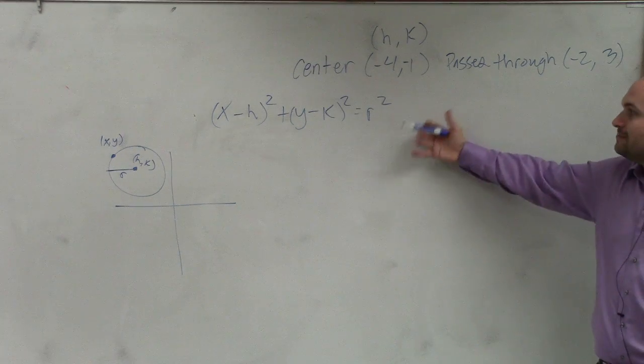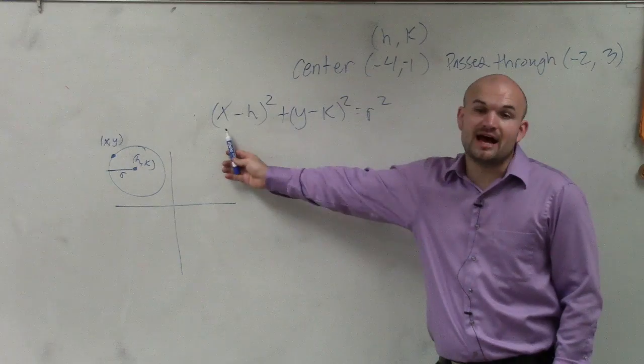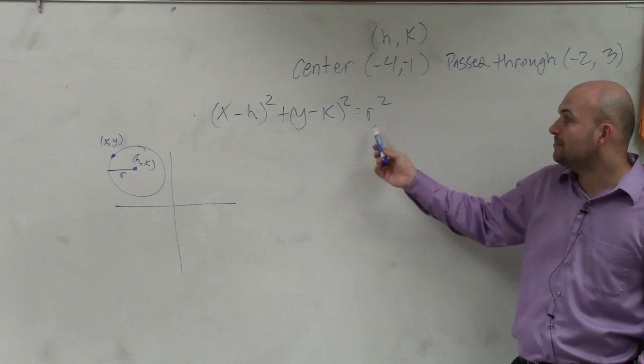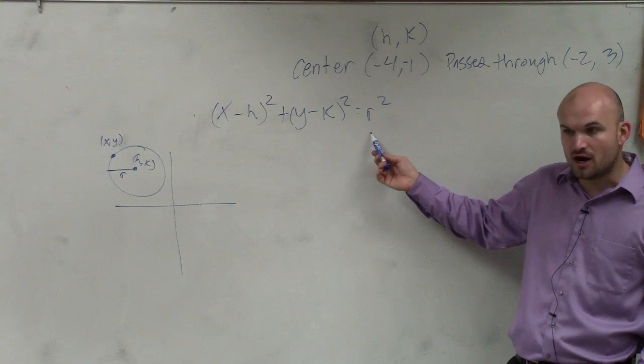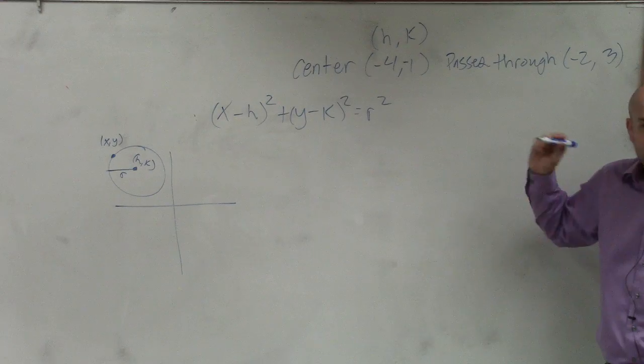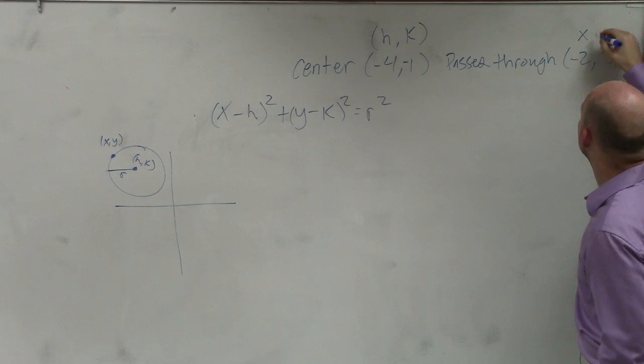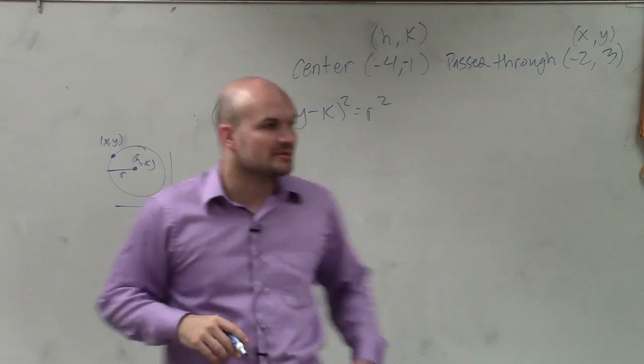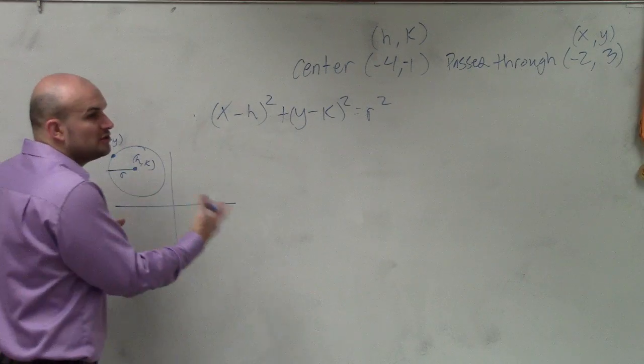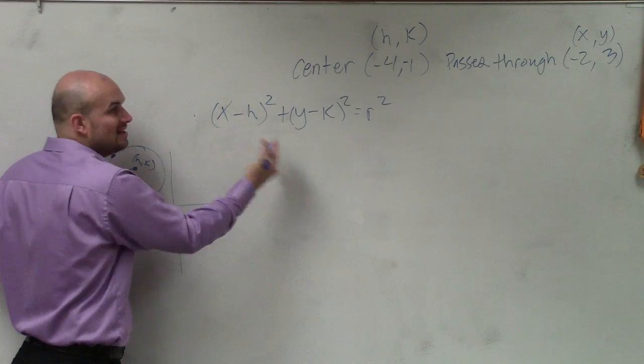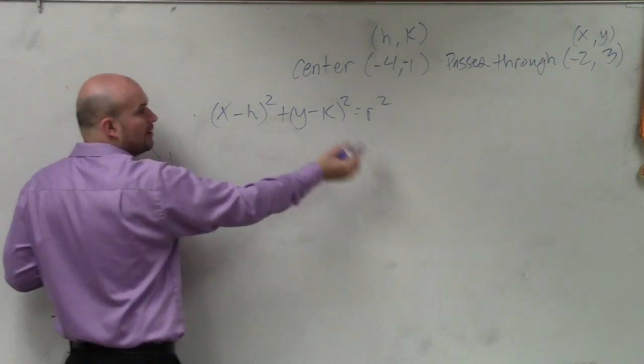No. So if I can plug in values for h and k, but leave r unknown, could I then solve for r? Yes. So do I have anything I could plug in for x and y? Well, I have this point that is given to me on the circle. So then what I'm going to do is plug those points in and then solve for r. Once I know r, I'll plug that into the equation with the center.